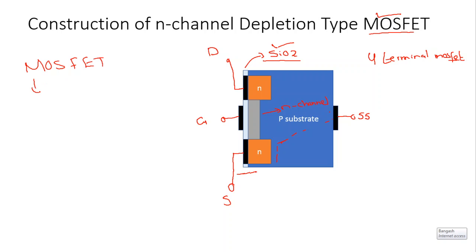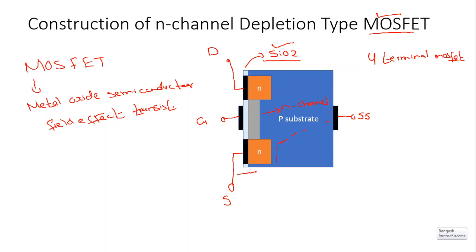Now why is it called the MOSFET? Let us understand the terminology. MOSFET stands for Metal-Oxide-Semiconductor Field Effect Transistor. Metal — because the drain and source terminals are connected through metal contacts to the n-doped regions. Oxide — refers to the silicon dioxide layer, which is a thin insulating layer that accounts for the high input impedance. Semiconductor — because this is a semiconductor device, the p-type substrate is a semiconductor material. Field Effect Transistor — because MOSFET is a type of FET.